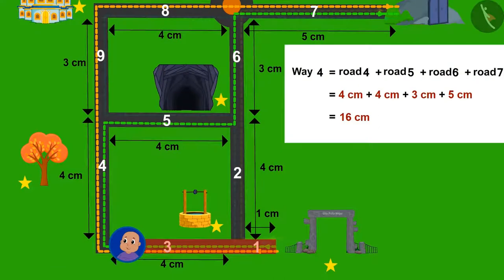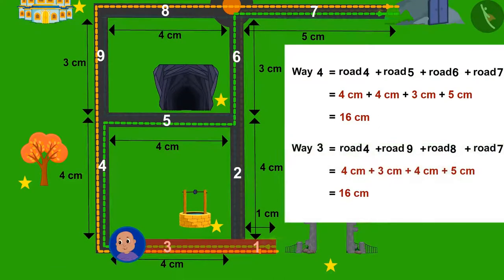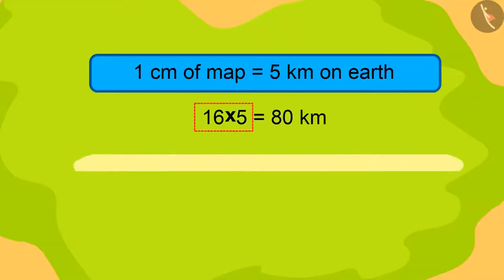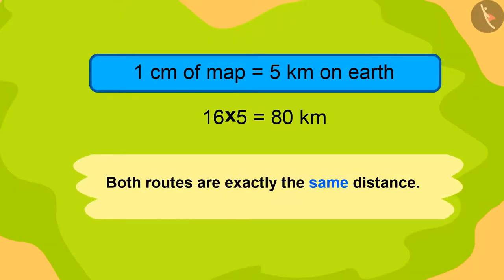Absolutely right. Both paths are exactly at the same distance. The total distance on the map is 16 centimeters. So, the actual distance would be 16 multiplied by 5. That is 80 kilometers.